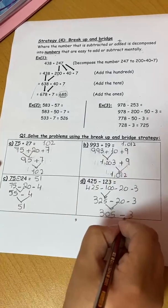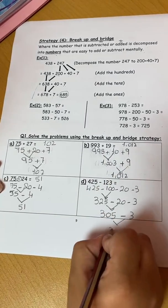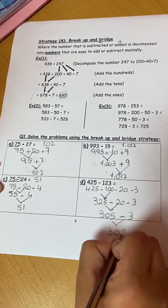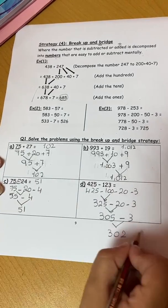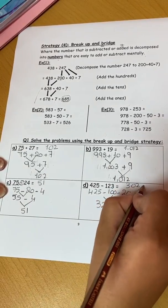Then the tens together so 325 minus 20 will be 305. Then the ones minus 3. At the end 305 minus 3 I have 302. So the answer is 302.